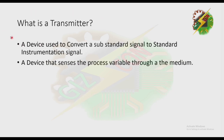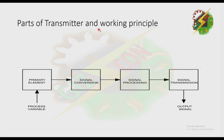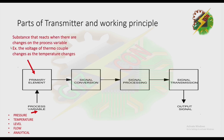Now let's discuss the transmitter. A transmitter is a device used to convert a substandard signal to a standard instrumentation signal. It is also a device that senses the process variable through a medium. The primary element is the substance that reacts when there are changes in the process variable. For example, the voltage of a thermocouple changes as temperature changes.